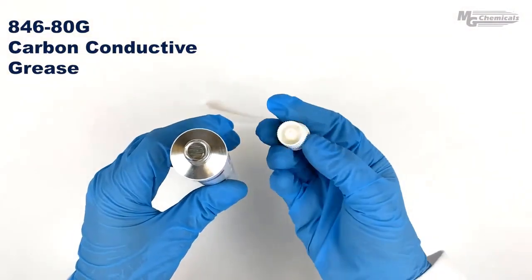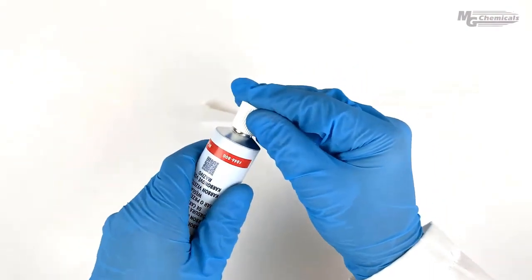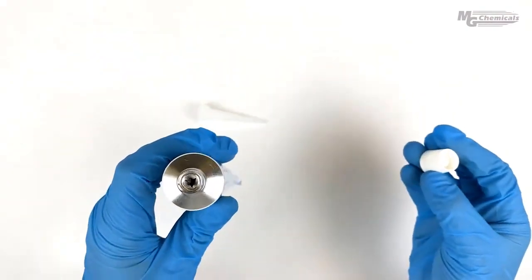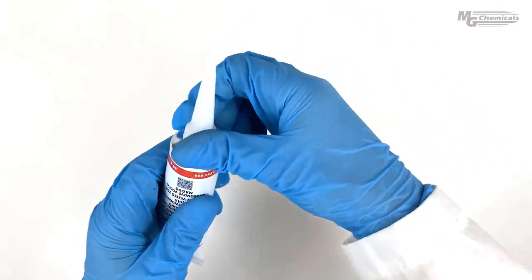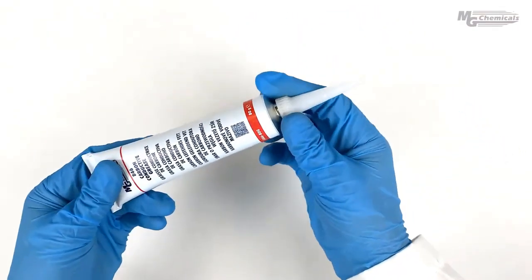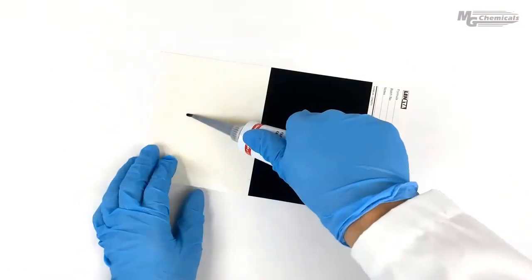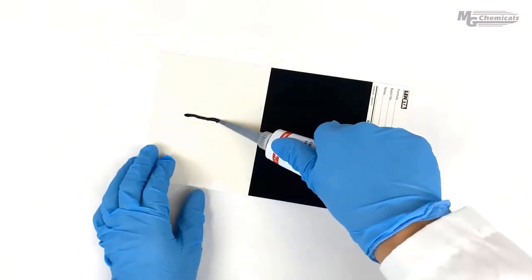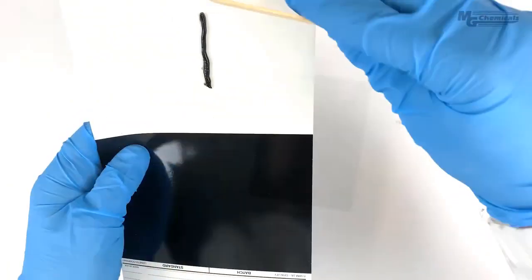Start by simply puncturing the foil cover using the cap, then screw the nozzle into place. Now, you can simply squeeze the tube to get an accurate bead of grease that you can trowel over to get higher surface coverage if needed.